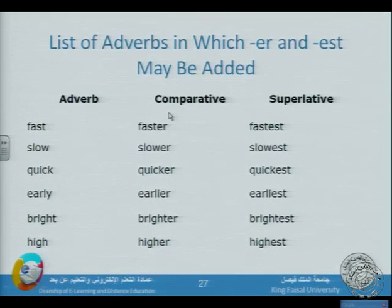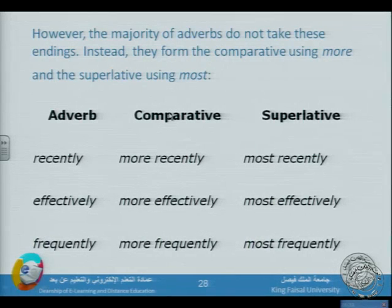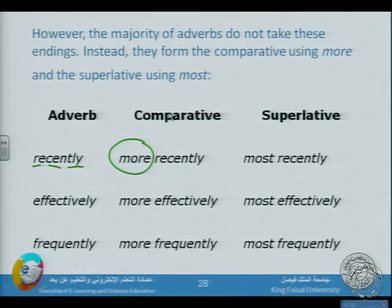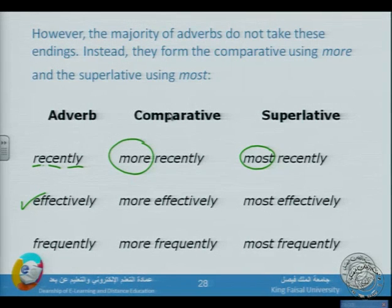Another example: 'The bird sings loudly' — a simple adverb. 'The moose sang louder than the bird' — comparative adverb. 'Pete sang the loudest of all' — superlative adverb. Here is a list of adverbs that can take -ER and -EST: fast/faster/fastest, slow/slower/slowest, quick/quicker/quickest, early/earlier/earliest, bright/brighter/brightest, high/higher/highest. However, the majority of adverbs use 'more' and 'most' instead.